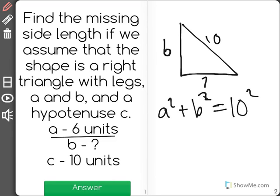Let me fill in A would be 6 squared here. So 6 squared is 36 plus B squared equals 100.